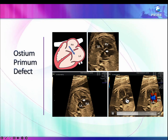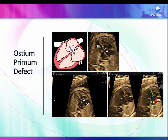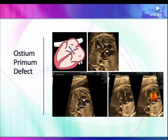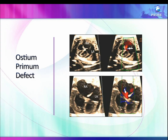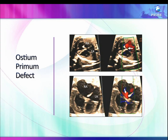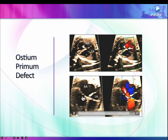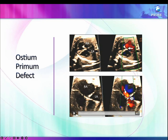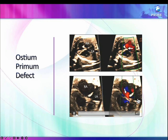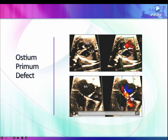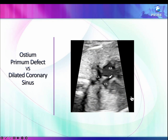You can see flow through the common AV canal. Both AV valves are at the same level, but there is no ventricular septal defect — only an atrial septal defect. This is called an ostium primum ASD. Here is another example: you see the ASD, both AV valves are at the same level, and a shunt from LA to RA — this is an ostium primum defect which you can diagnose with great confidence.